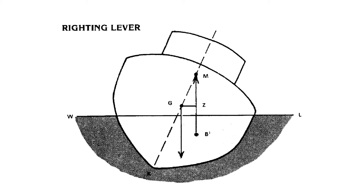Finally, we'll talk about the righting lever, which is denoted by the letters GZ, and I have included this in the slides as well. When a vessel is heeled by an external force such as strong winds or waves, the center of gravity is unaffected by the heel — it remains where it is, because there is no internal shift of weights. The center of buoyancy has shifted from B to B1. The weight is considered to act vertically downwards through G, and the force of buoyancy — equal to the weight of water displaced — acts vertically upward through B1 and the metacenter where it cuts the centerline.